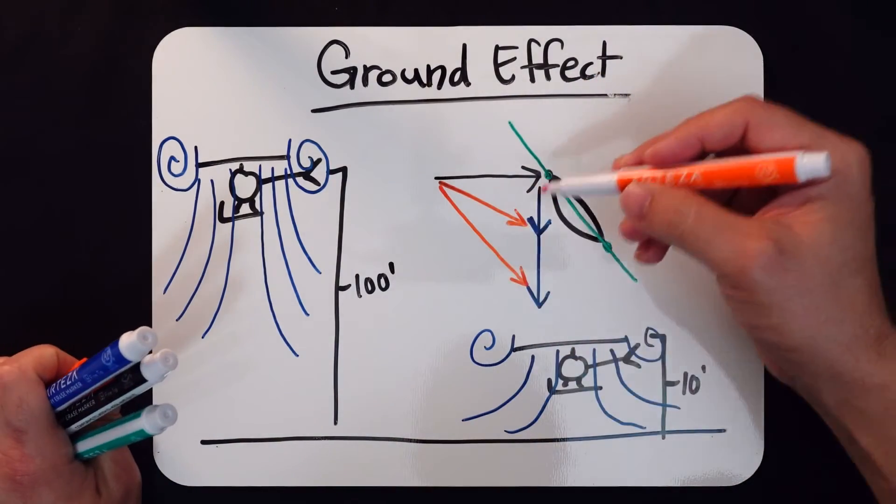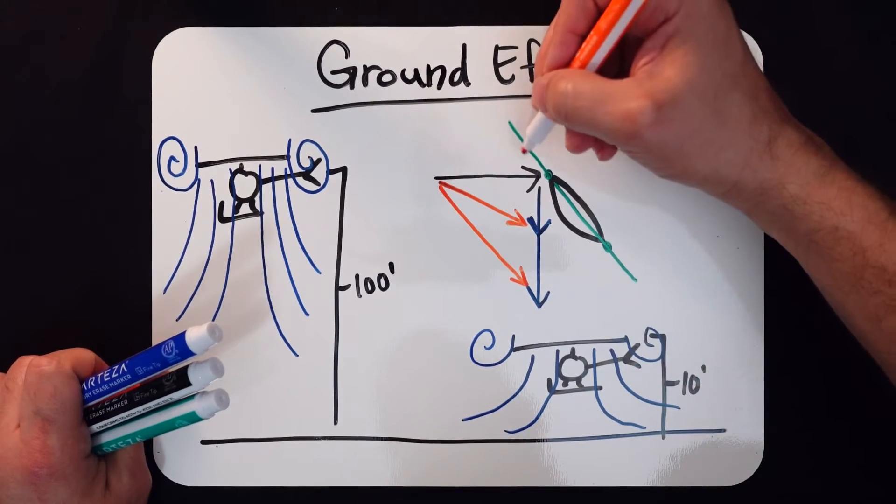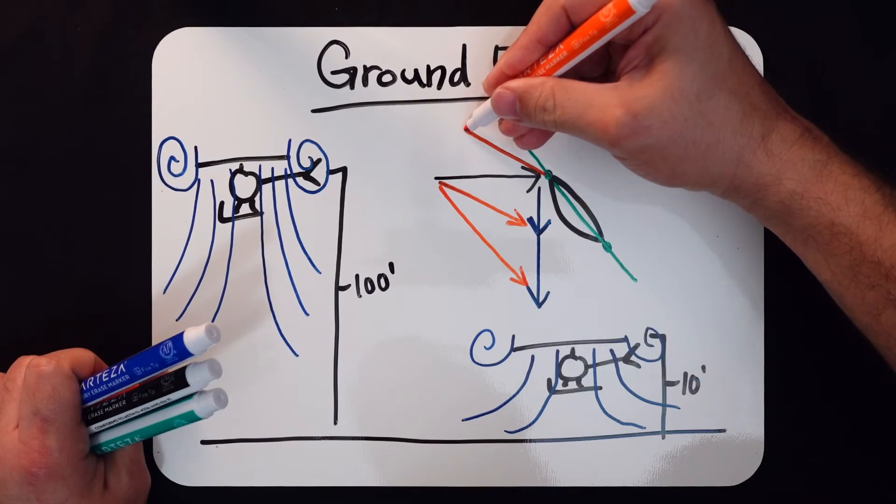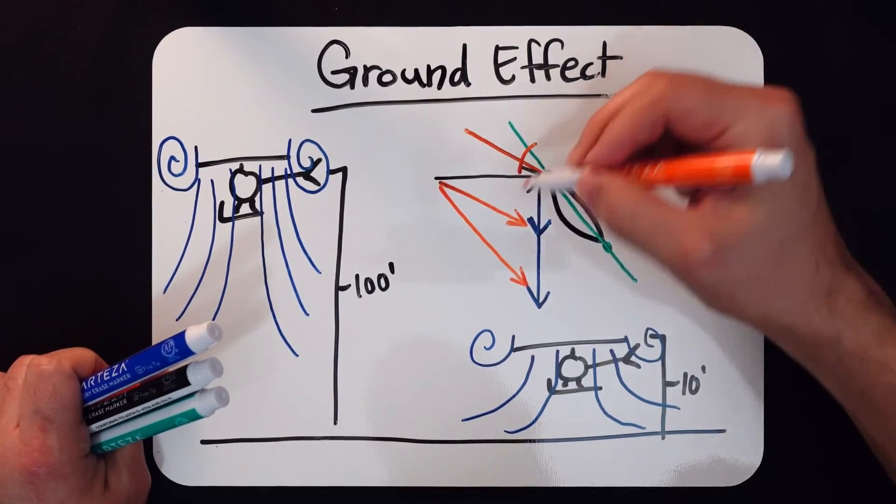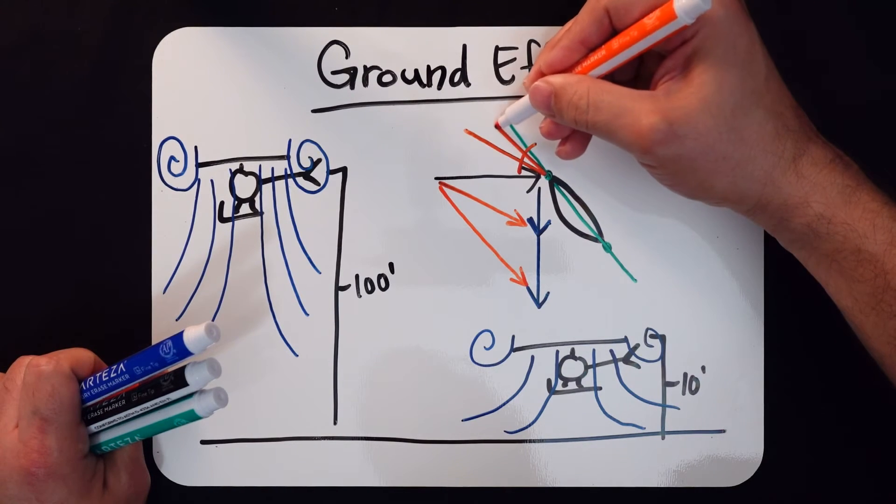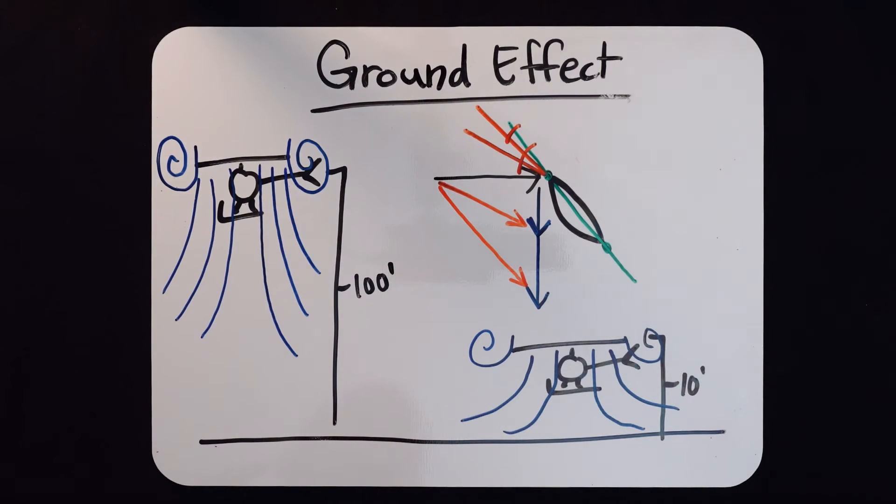So if we translate both of these vectors back up here, we take this shallow in ground effect vector and map it out here. We're going to get one angle of attack, and if we take this very steep out of ground effect vector, it'll go here, and we'll get a separate smaller angle of attack.